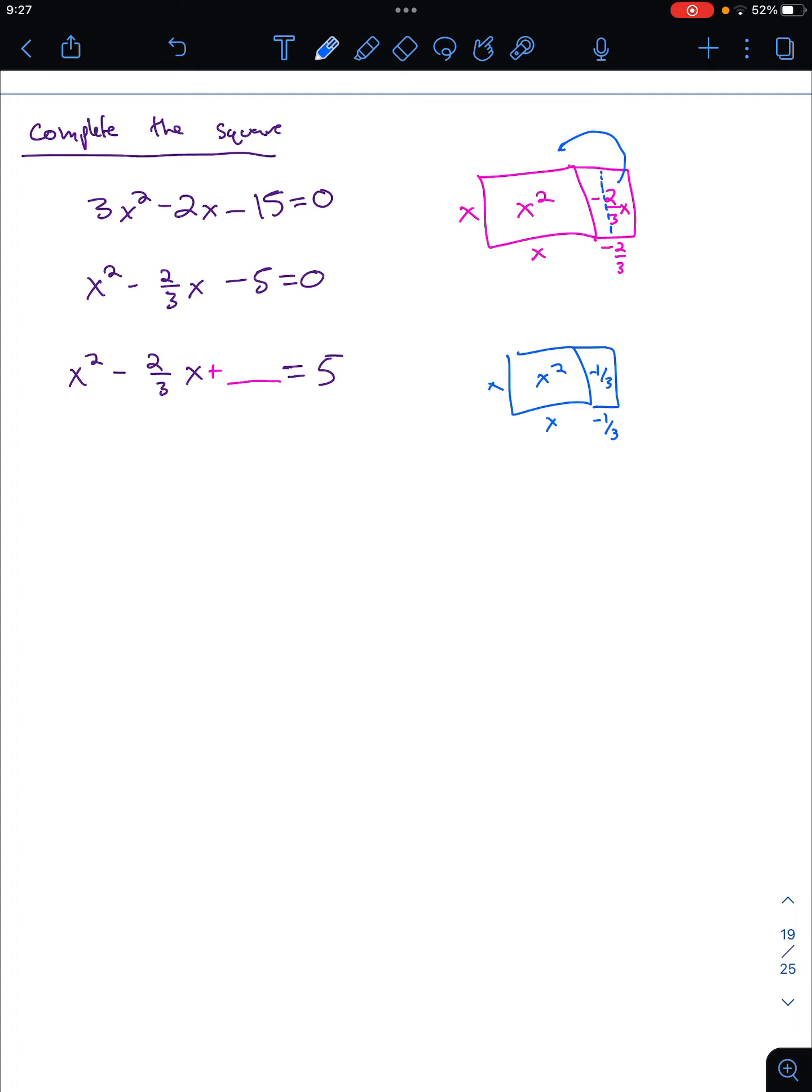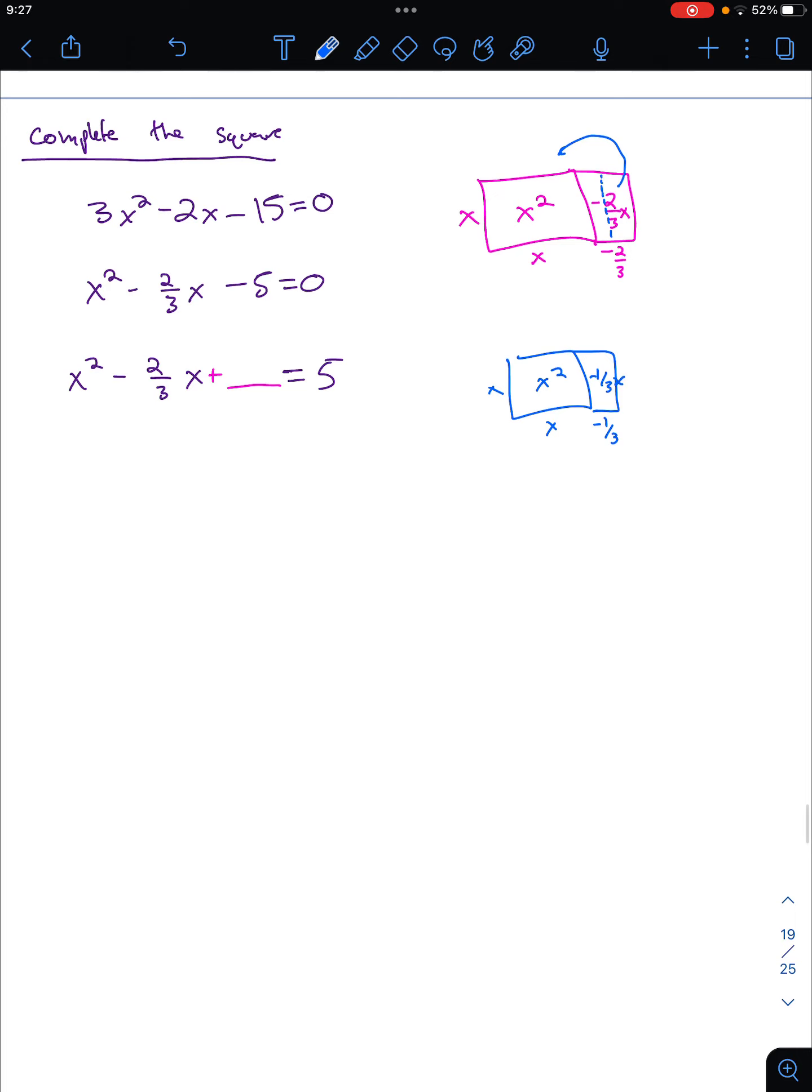And if I wanted to complete the square and arrange this into a square, I need to chop this in half and bring half of it up here, because that's going to give me x squared. Half of negative 2 thirds would be negative 1 third. So I get negative 1 third x. And then here I would also have negative 1 third x. And then I need to complete this square, because I'm set up now so that my dimensions are x minus 1 third x minus 1 third. So I should have x minus 1 third squared, which would be delightful. But first, I need to actually fill in this part of the square. And so what do I need to add to fill that in? Well, that's a negative 1 third times a negative 1 third, which is positive 1 ninth.